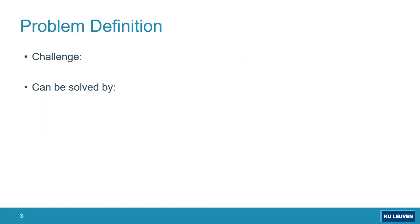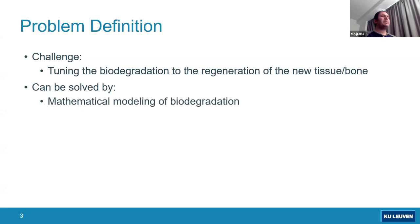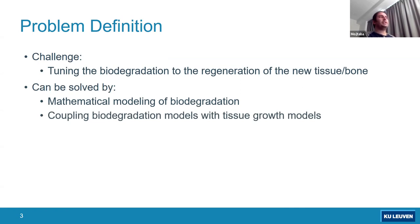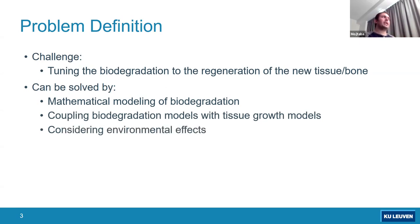The problem is that for various applications we need to control the release rate of these materials. The degradation behavior should be tuned to the rate of bone or tissue regeneration — for orthopedic, cardiovascular, and similar applications. The main question we are trying to address is how to optimize and tune this degradation behavior, which is usually done through in vivo or in vitro studies, either in the lab or in the body. We want to match the degradation rate to the rate of new tissue or bone regeneration, and we also want to consider environmental effects.